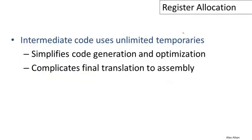Recall that intermediate code can use unlimited numbers of temporaries, and this simplifies a number of things. In particular, it simplifies optimization because we don't have to worry about preserving the right number of registers in the code.